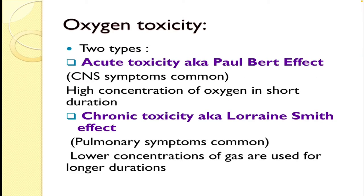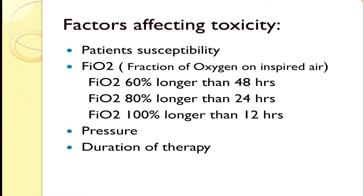Talking about oxygen toxicity, it is of two types: acute toxicity and chronic toxicity. Acute toxicity is also known as the Paul Bert effect. In this, CNS symptoms are common and high concentrations of oxygen are used for a short duration. In chronic toxicity, also known as the Lorraine Smith effect, pulmonary symptoms are common and lower concentrations of gas are used for a longer duration.